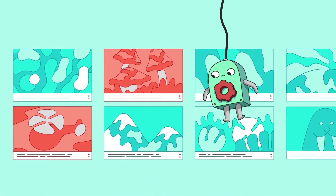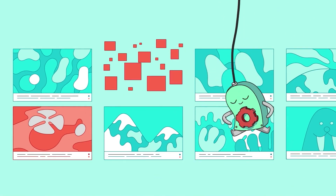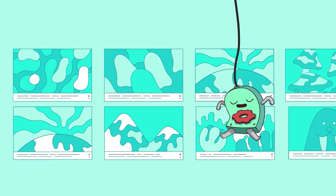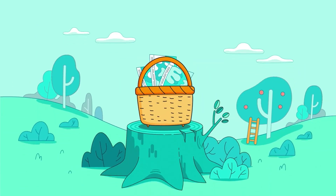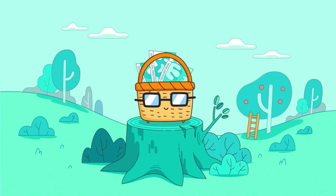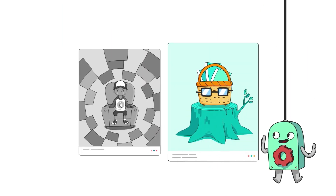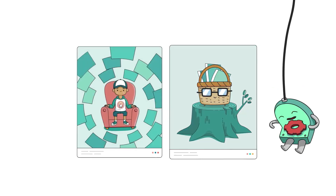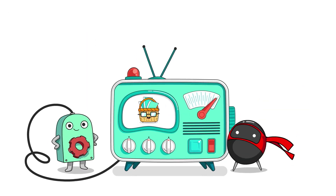If you find something inappropriate that we missed, you can block it or report it for fast review. Another option is to handpick the content yourself. If you choose this option, your child won't be able to search. Pick the option that you think is best for your child. You can change these settings at any time.